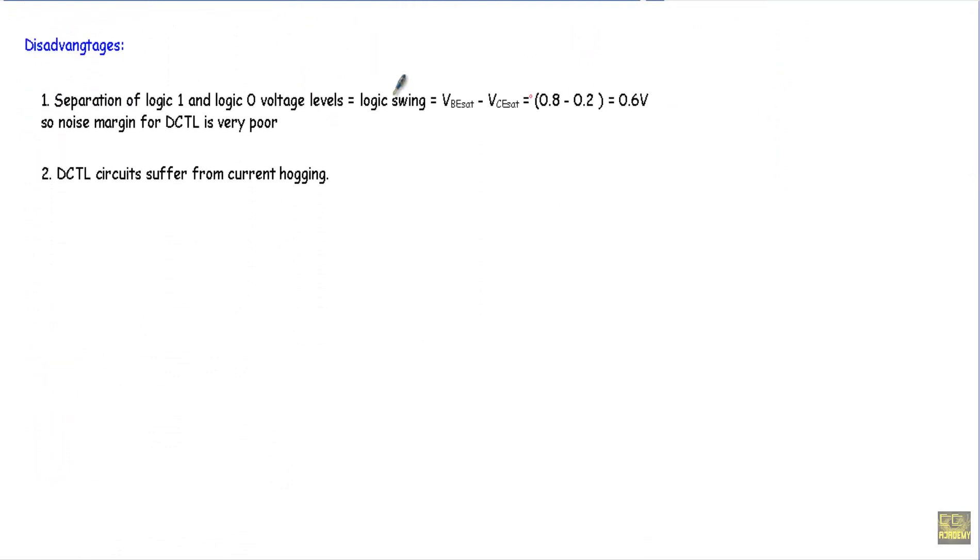Now there are some disadvantages of this DCTL logic family. First, separation of logic one and logic zero voltage levels is known as logic swing. VBE sat minus VCE sat will be equal to around 0.6 volts, which is very small. That means I will apply 0.2 volts for logic zero and 0.8 volts for logic one. This gives rise to a small noise margin of our DCTL circuit.